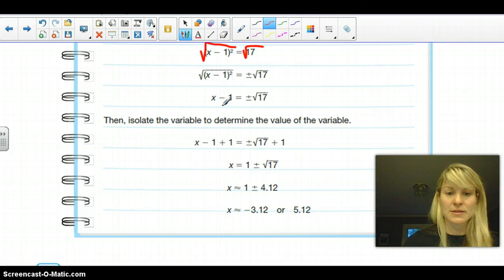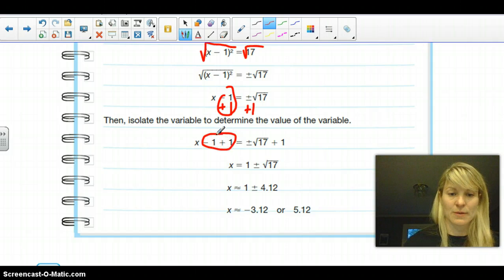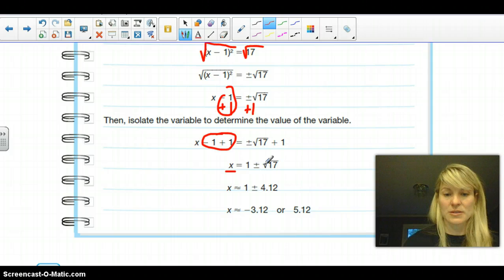At this point, it's a solve for x, so we want to add 1 to this side. So this will equal 0, as it does right here, and we're left with just x. And then we have 1 plus or minus the square root of 17.